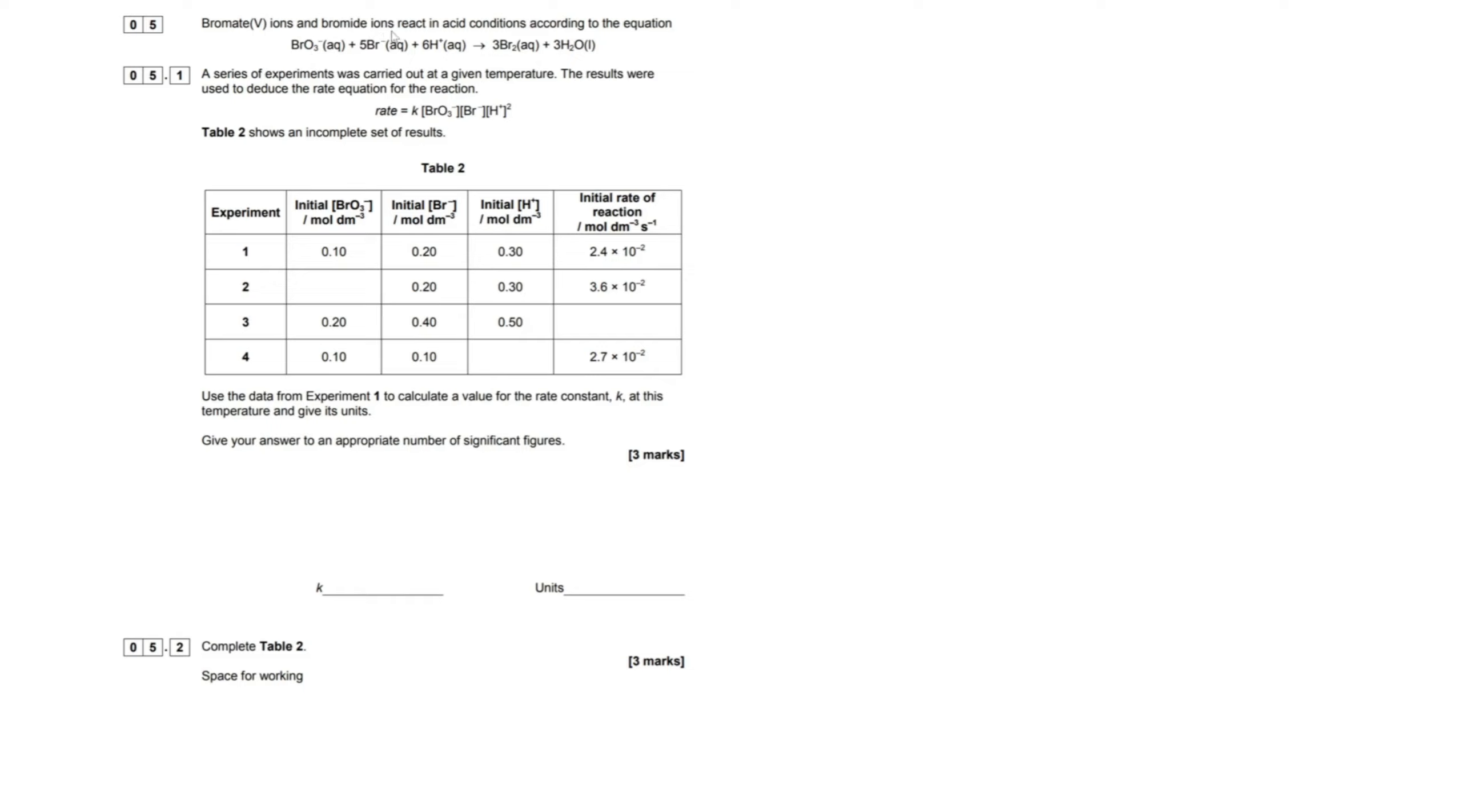Bromate 5 ions and bromide ions react in acidic conditions according to the following equation, and we're given a nice equation here. A series of experiments was carried out at a given temperature. The results were used to deduce the rate equations for the reaction. So we're given a rate equation here, and we can just directly say what the orders of reactants are from this rate equation, which is why I said you sort of have to do things backwards. We have a nice data table here of all our concentrations. Use the data from experiment 1 to calculate a value for the rate constant k at this temperature and give its units. And then we have to give our answer to an appropriate number of sig figs.